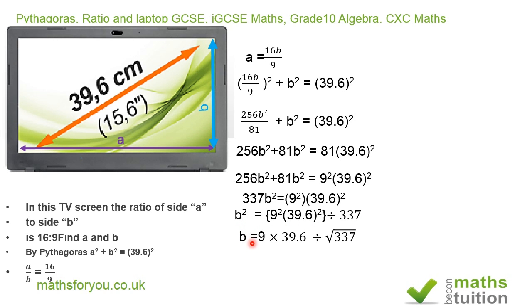If we take the square root of both sides, we have that b = 9 × 39.6/√337. And the square root of 337 is 18.36.